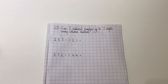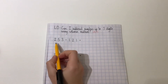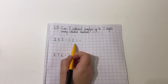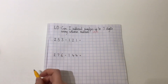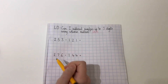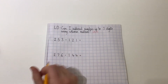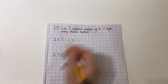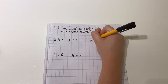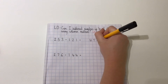In this video, we are going to be revising column method for subtraction for up to three digit numbers. I've got my first subtraction question here. As you can see, both numbers have three digits, so we have to use our place value knowledge of the hundreds, the tens and the ones.